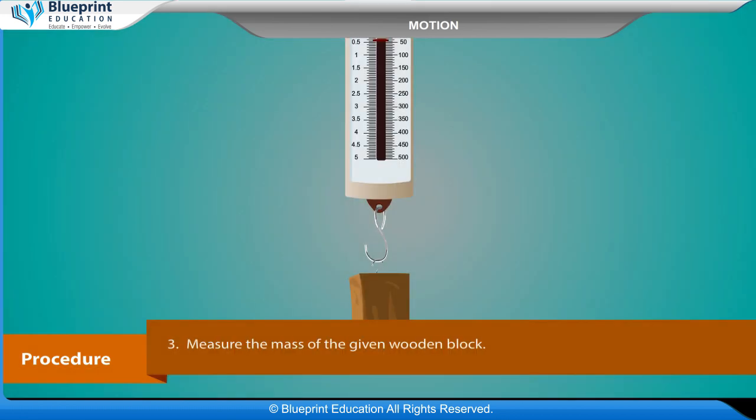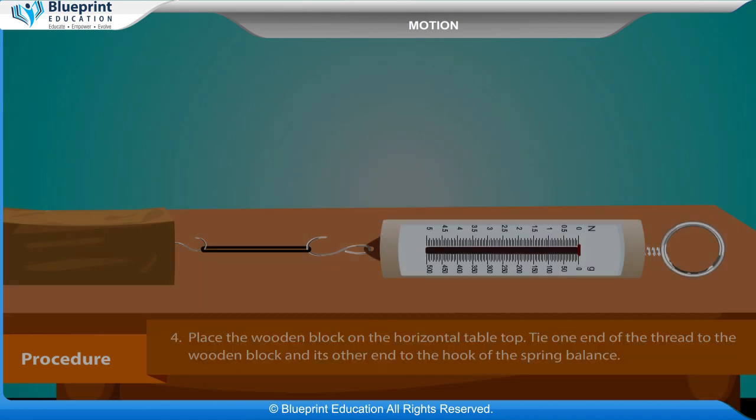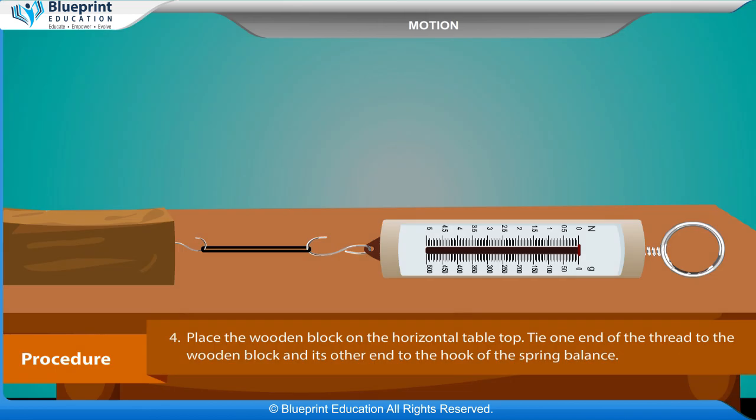Measure the mass of the given wooden block. Place the wooden block on the horizontal table top. Tie one end of the thread to the wooden block and its other end to the hook of the spring balance.